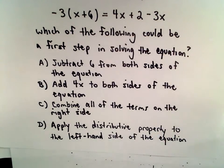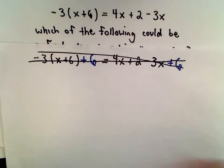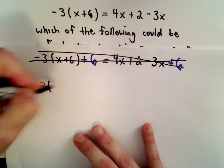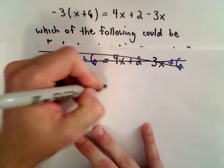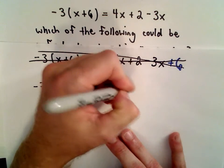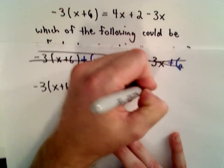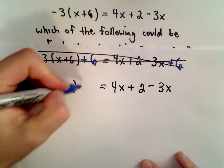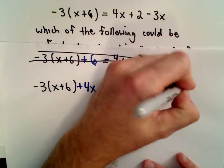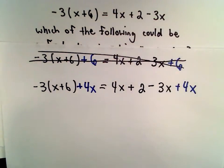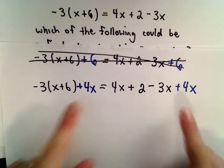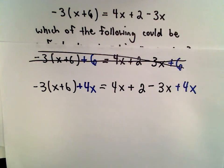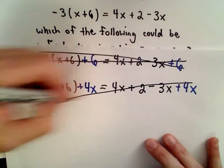Part B says add 4x to both sides of the equation. If we add 4x to both sides, I don't really see how that's going to help me simplify things at all. I'm just introducing more terms involving x that I'm eventually going to have to reduce and simplify and combine. I don't think part B makes any sense.